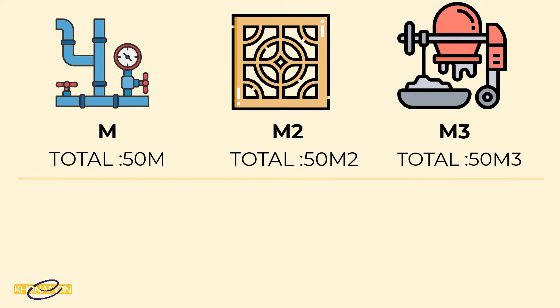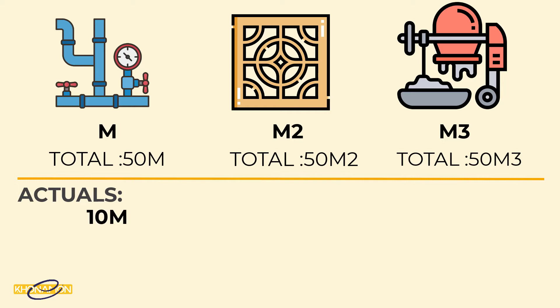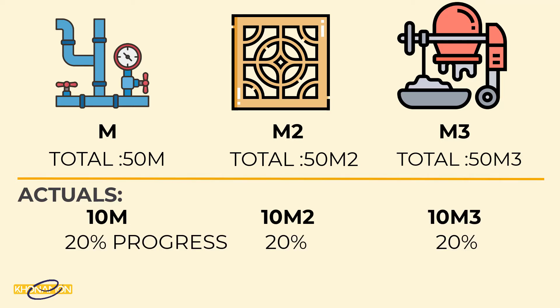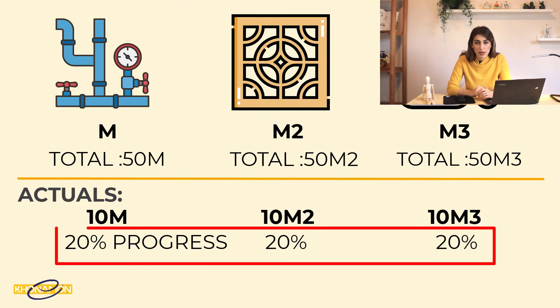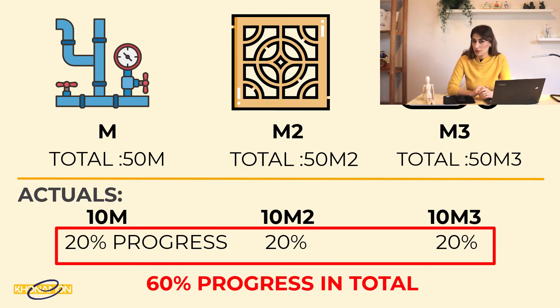The project continued and we got the actuals in the first week: 10 meters of piping, 10 square meters of ceramic, and 10 cubic meters of concrete. So we have 20% progress in each activity. In this way, can I say in total I have 60% progress in my project? Is it right?